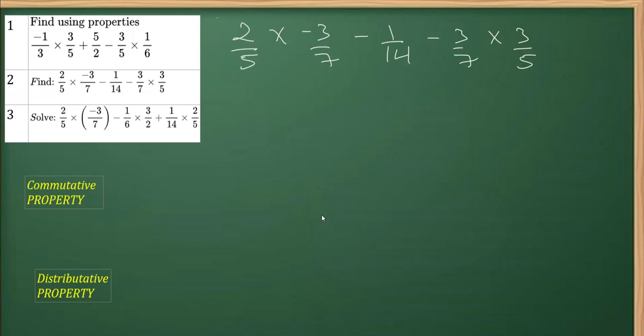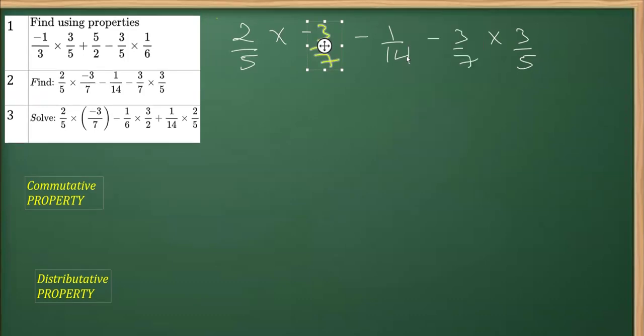Now what you can observe here, the fraction 3/7 is common, right? It's 3/7 here and 3/7 is here. So I can take 3/7 as common but not before applying the commutative property where we'll be rearranging these two.